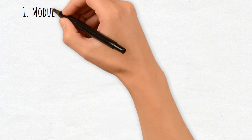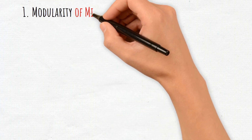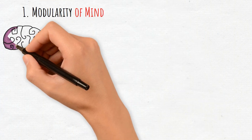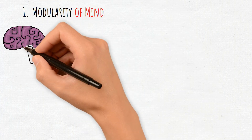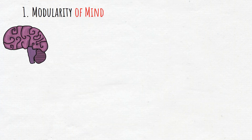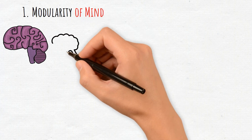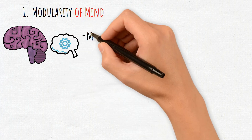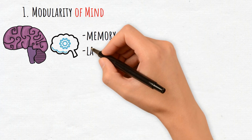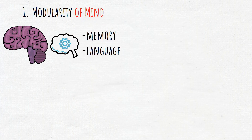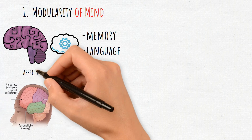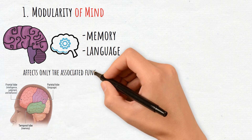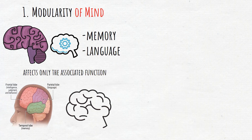1. Modularity of Mind. The brain is composed of distinct regions or modules that handle specific cognitive functions like memory and language. Damage to a module affects only the associated function, revealing the brain's modular structure.